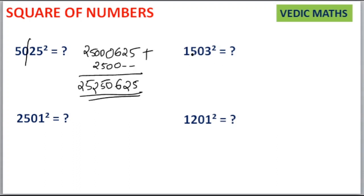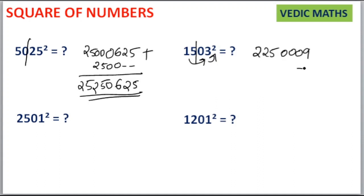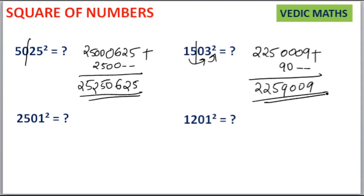Same way for 1503 squared: separate it as 15 and 3. 15 squared is 225. 3 squared is 9 — write it as a 4-digit term: 0009. Then 15 into 3 is equal to 45, and 45 into 2 is equal to 90. Leave 2 places — the 10th place and units place — then write 90 here. Adding the terms gives you 2259009 as your answer.